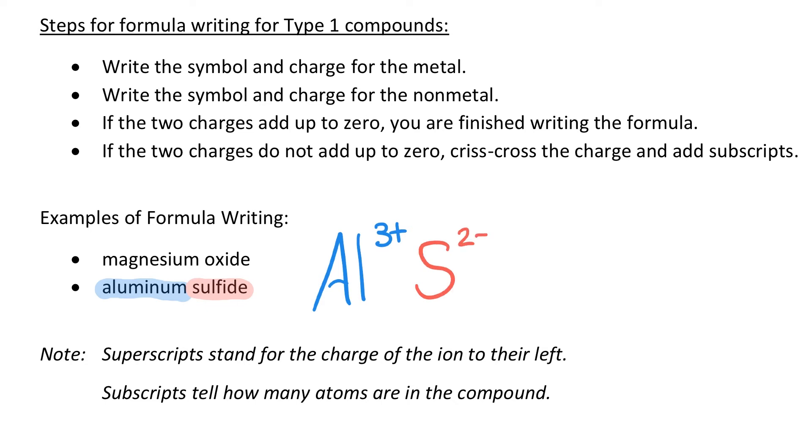If I was to look at those, I can see that +3 and -2, those do not add up to zero. So I'm going to do what's called the crisscross method.